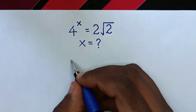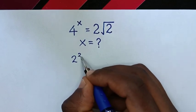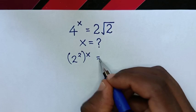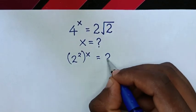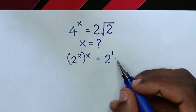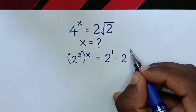So from this, 4 is the same as 2 squared, then bracket to the power of x. This is equal to 2, which is the same as 2 to the power of 1, then times 2 square root, which is the same as 2 to the power of one-half.